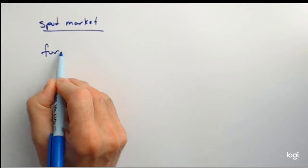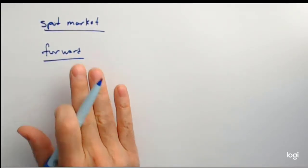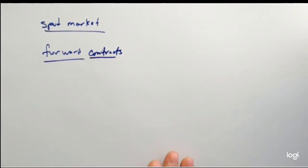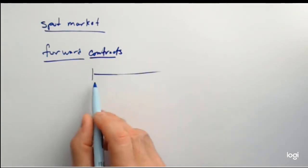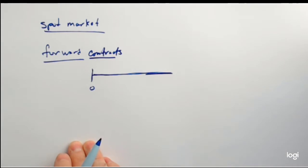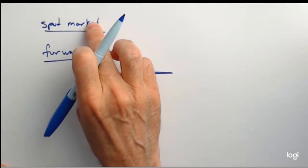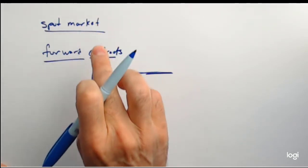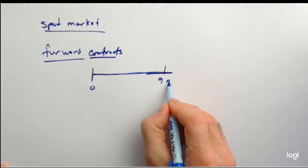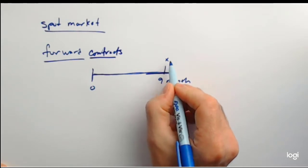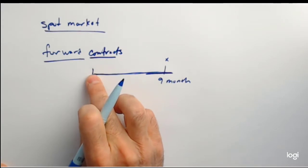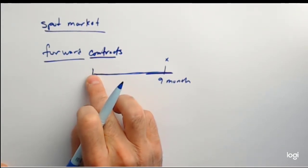A forward contract is an agreement negotiated between two parties for the delivery of a physical asset or a financial asset at a certain period in time in the future — at expiration. When you enter into a forward contract, no money changes hands and no commodity changes hands. It's not like a spot transaction where the sugar and the money moved at the same time. You enter into a forward contract, and then when the contract expires — say in nine months — that's when the money and the commodity change hands. You lock into a forward price, a price that you're going to pay in the future.